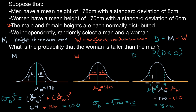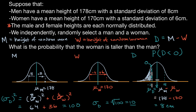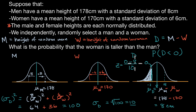We want to find the probability that D is less than zero — the area under the curve to the left of zero on this distribution. We can figure out the Z-score for D equaling zero: Z equals zero minus our mean of eight, divided by our standard deviation of 10, which gives negative eight over ten, or negative 0.8. You could look up a Z-table to find the total area under the curve below Z equals negative 0.8.